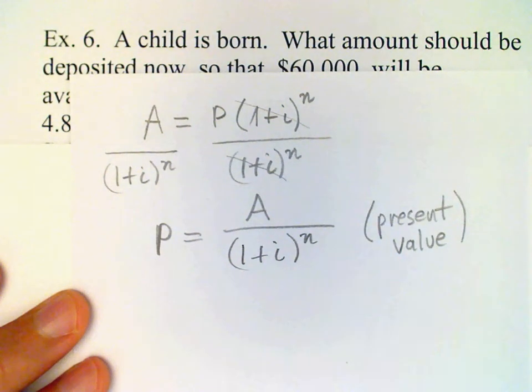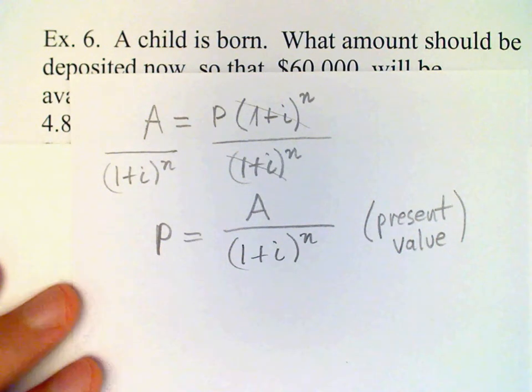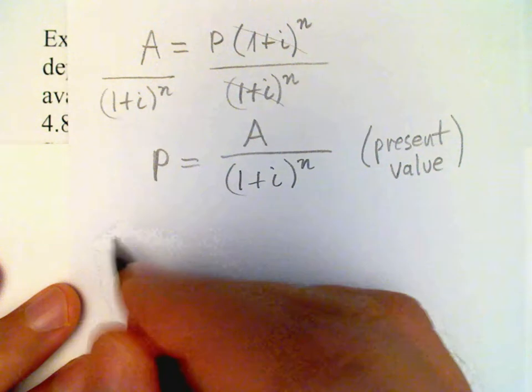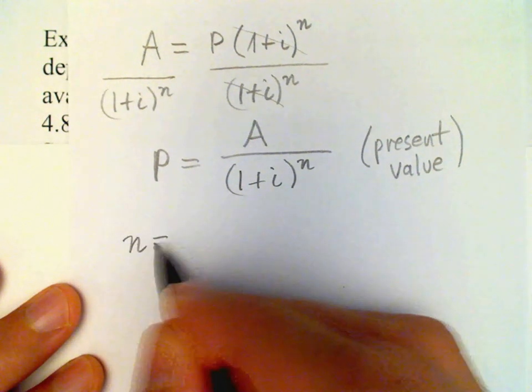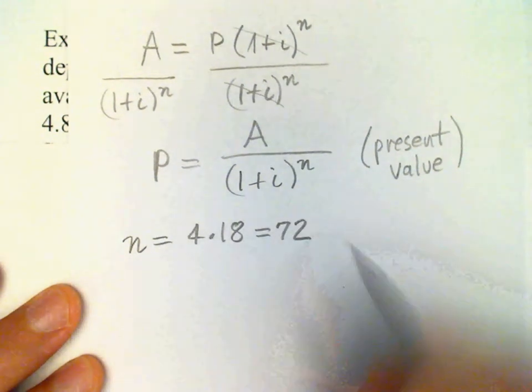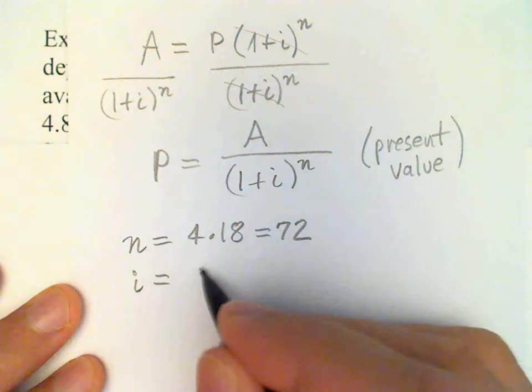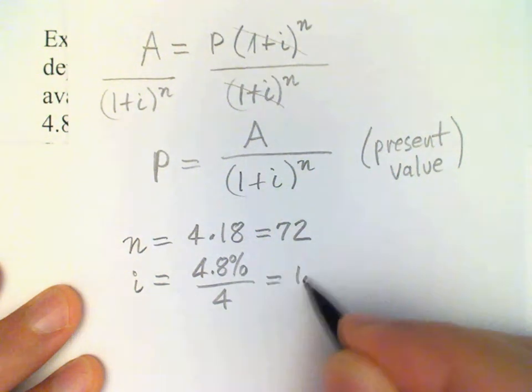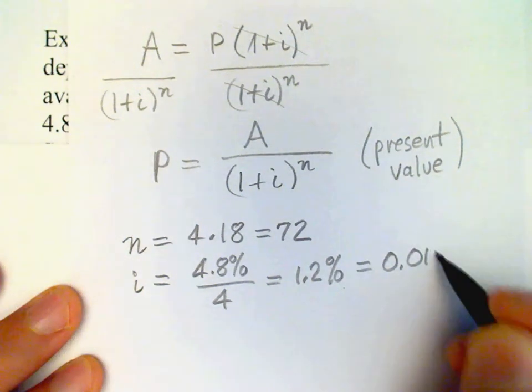This is our present value formula under compound interest. In this particular case, we have 18 years and 4.8% annually with quarterly compounding. That means our n is going to be 4 times 18 or 72, and our i is 4.8% divided by 4, or 1.2%, 0.012 converted to a decimal.